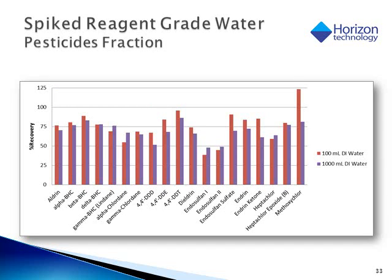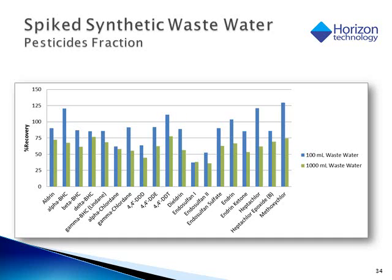Shown are the recoveries for pesticides in reagent-grade water and synthetic wastewater spiked with the test mix. Pesticides in the test mix were about an order of magnitude lower than the other acid, neutral, and basic SVOCs. The 100-milliliter and 1-liter sample recoveries are shown side-by-side, with a slight edge in recoveries found for the 100-milliliter sample method.